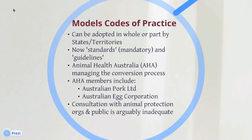Staying at the national level, the model codes of practice provide minimum standards and specify the duty of care to be given to animals. These model codes of practice can either be directly adopted by the states or territories through their animal welfare legislation, or they may serve as a foundation for their own code of practice tailored to meet their specific regional needs. The model codes of practice were initially drafted in the 1980s and are currently being revised and rewritten as national standards and guidelines.